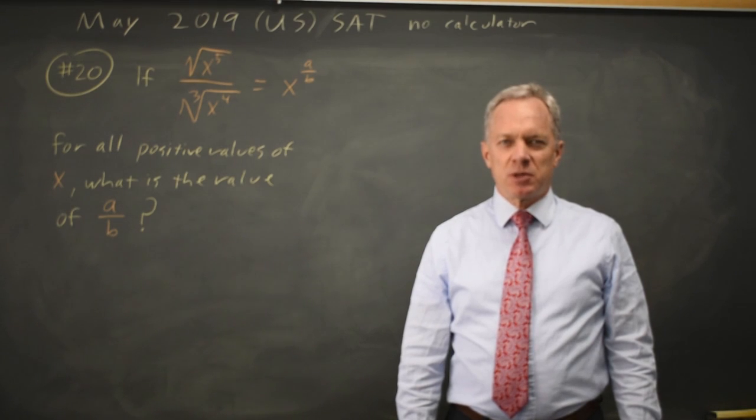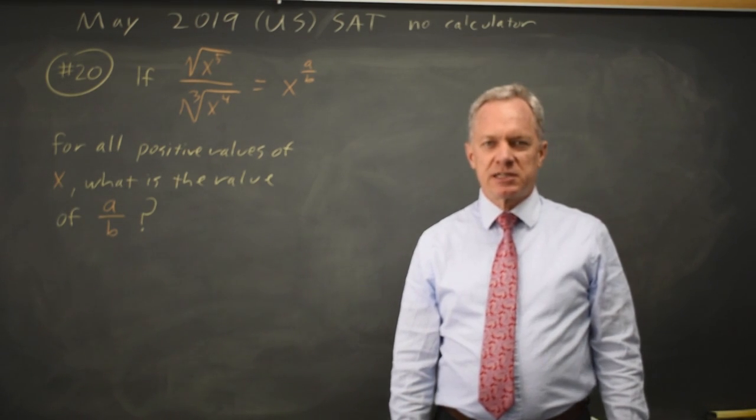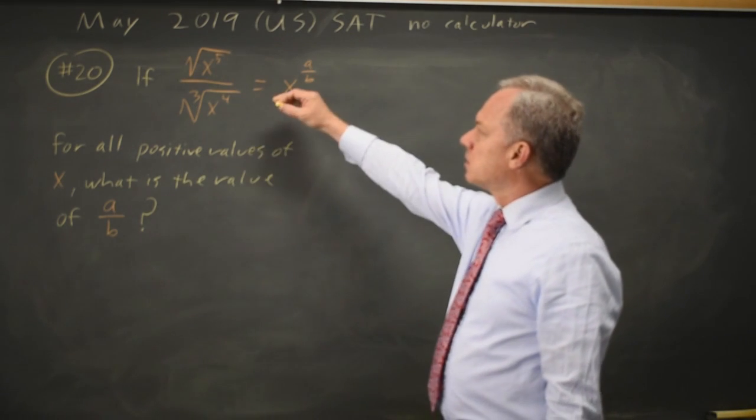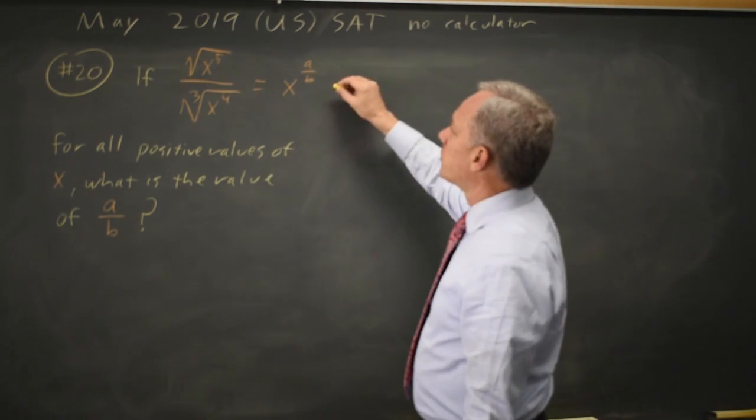This is non-calculator question number 20 for the May 2019 U.S. exam. College Board is asking us to work with radicals and exponent rules.